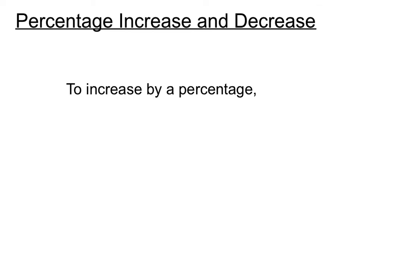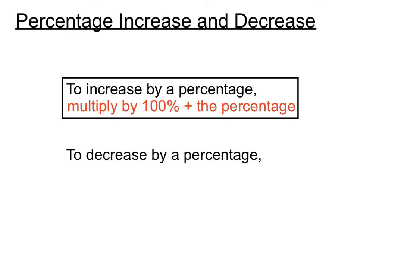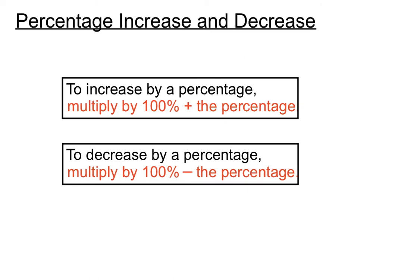Let's recap. To increase by a certain percentage, multiply by 100% plus that percentage, then convert to a decimal. To decrease by a certain percentage, multiply by 100% minus the percentage, then convert to a decimal. The key difference: for increase, you add the percentage to 100%; for decrease, you subtract it from 100% before multiplying. Working in decimals makes it much easier on the calculator.